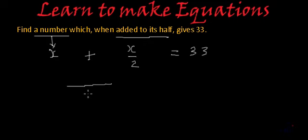LCM will be 2 and since there is nothing below x, we can peacefully write 1 as its denominator because any number divided by 1 gives the number itself. So 1 to the 2, 2 multiplied by x is 2x plus 2 divided by 2 is 1. 1 multiplied by x is x and this is equal to 33.